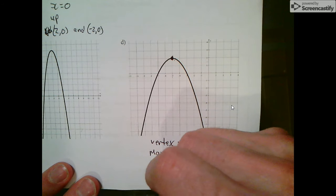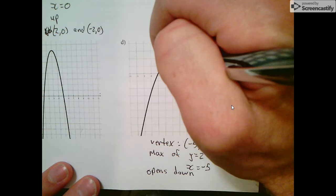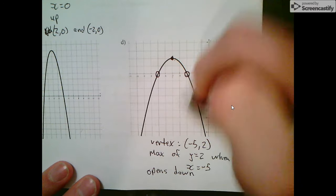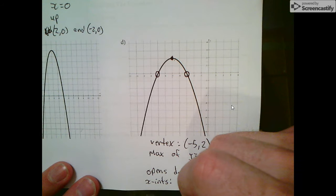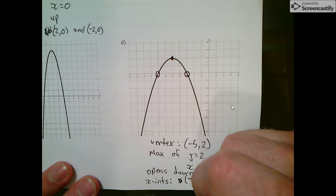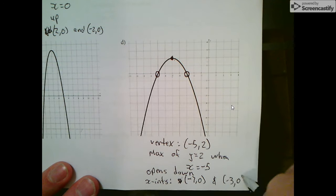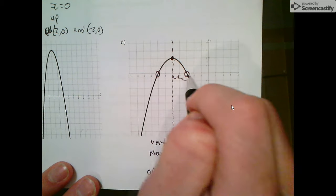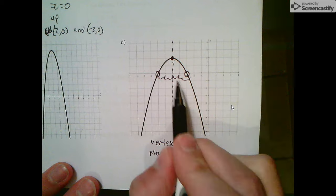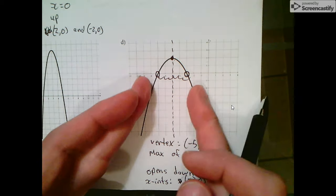It opens down. That's its direction of opening. Its x-intercepts are here at -7 and -3, so (-7, 0) and (-3, 0). What's interesting is here's the axis of symmetry. You'll notice our x-intercepts are the same distance away—both two units in either direction from the axis of symmetry. Everything's mirrored across it.